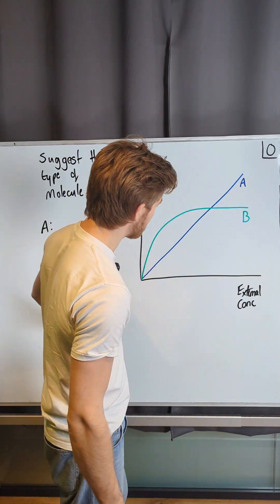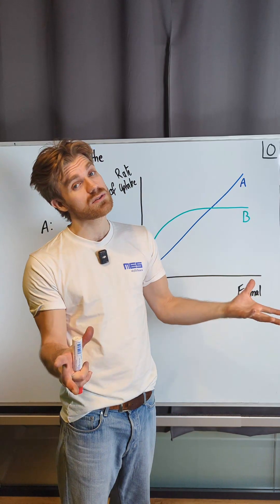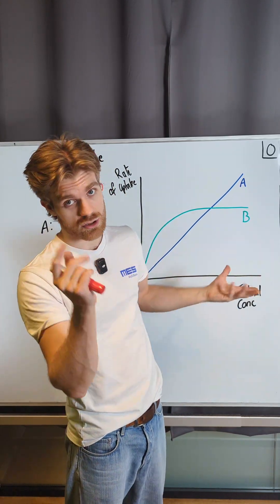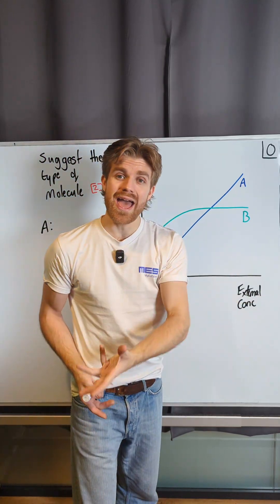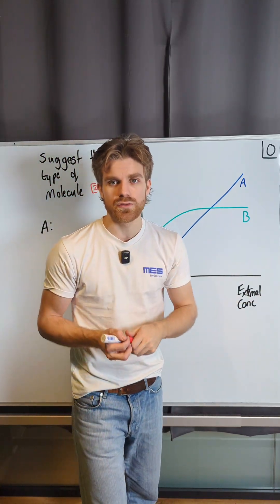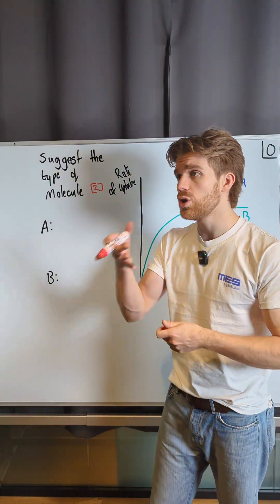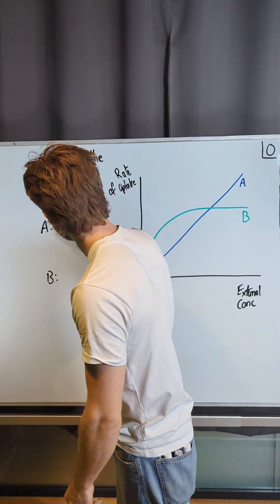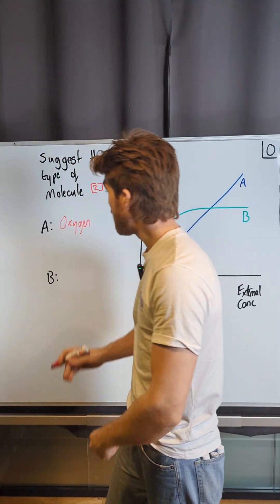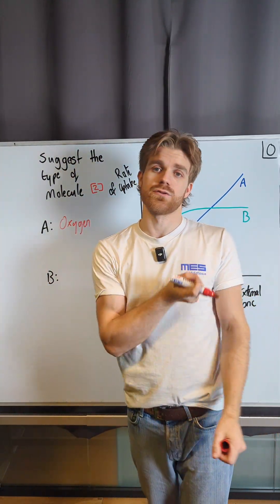A is a linear relationship. As long as the external concentration is increasing and nothing else is a limiting factor, such as surface area or temperature, then the rate of uptake is going to increase. So A must be simple diffusion. What type of molecule is moving by simple diffusion? It could be a small non-polar molecule, something like oxygen, carbon dioxide, or a fatty acid.